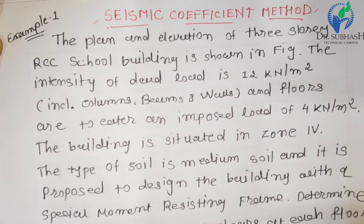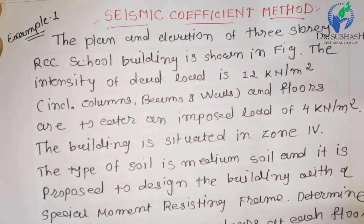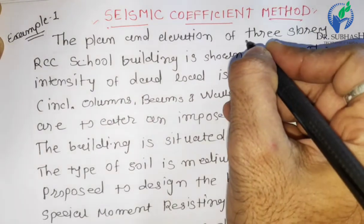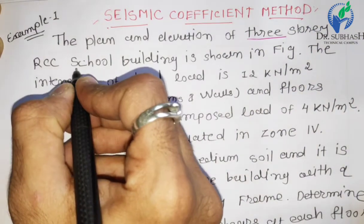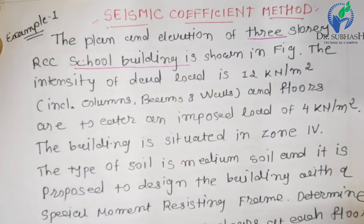Let's start with the first example on the seismic coefficient method. Please read the data carefully, and based on that we have to start solving the example. The data given is the plan and elevation of a three-story RCC school building — please underline 'school building' — as shown in the figure already provided.